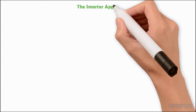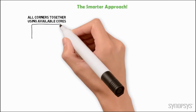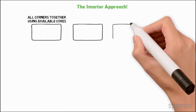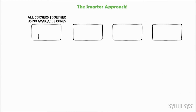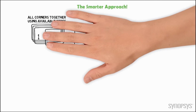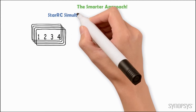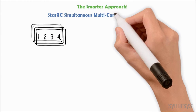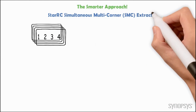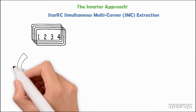There is a smarter way. It allows you to extract all corners together using available CPU resources and enabling unique efficiency with the same sign-off accuracy. It is STAR-RC's Simultaneous Multi-Corner Extraction Technology, or SMC.